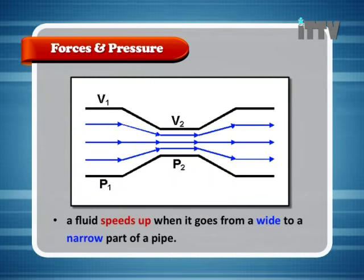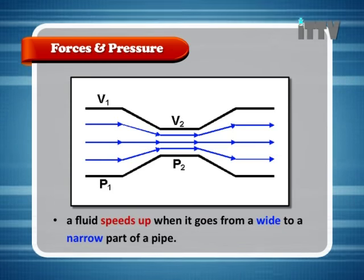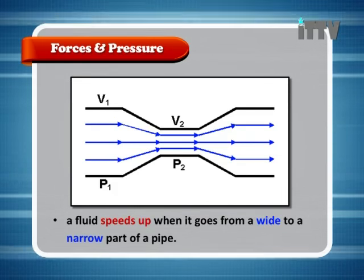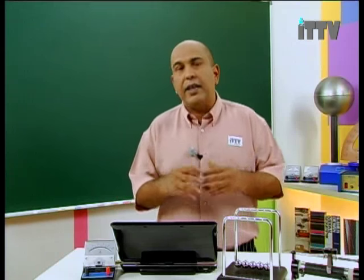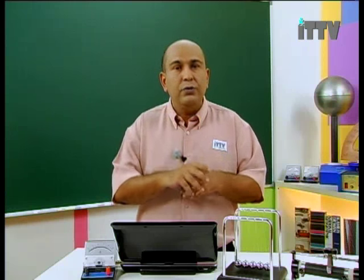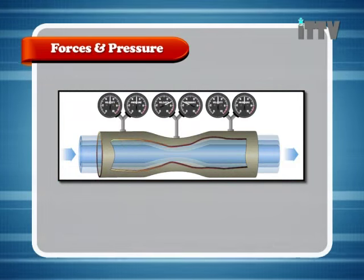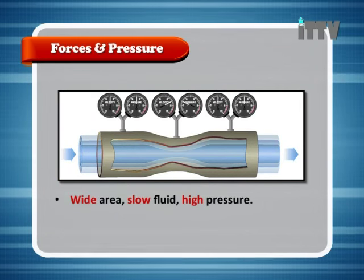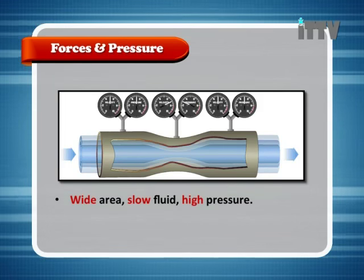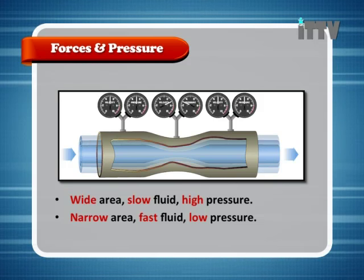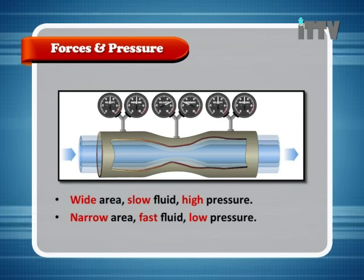A fluid speeds up when it goes from a wide to a narrow part of a pipe. This is another area where we use Bernoulli's Principle — in pipes, exhaust pipes, jet engines, wherever we have a narrow area, the fluid moves faster. Faster fluid means lower pressure. Wide area: slow fluid, high pressure. Narrow area: fast fluid, low pressure.